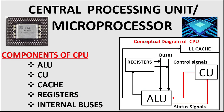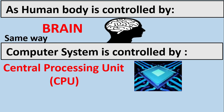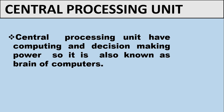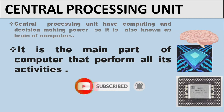In this lesson, we will learn about Central Processing Unit and its different components. As the human body is controlled by the brain, the computer system is controlled by the central processing unit. So we can say CPU is the brain of the computer system. The central processing unit has computing and decision-making power, and it is the main part of the computer that performs all of its activities.